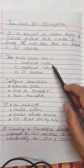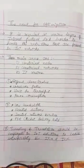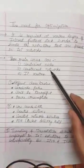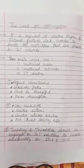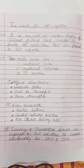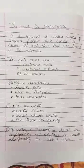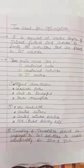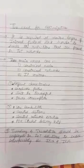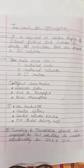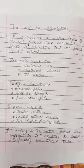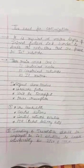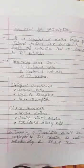A constraint node is nothing but a node where it has sensors as well as actuators, and it is made to handle a specific application.